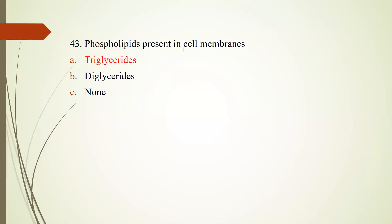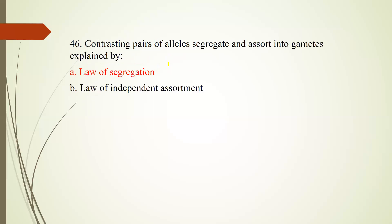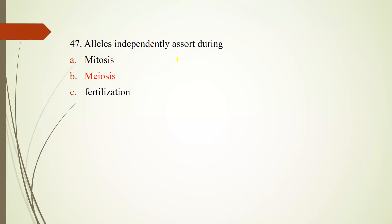Number forty-three: phospholipids present in cell membranes - the type is not triglycerides but diglycerides. Number forty-four: follicle stimulating hormone is secreted by anterior pituitary gland. Number forty-five: basic principles of inheritance were given by Gregor Johann Mendel. Number forty-six: contrasting pairs of alleles segregate and assort into gametes was explained by the law of segregation, the first law of Mendel. Number forty-seven: alleles independently assort during the process of meiosis and then unite again during random fertilization.